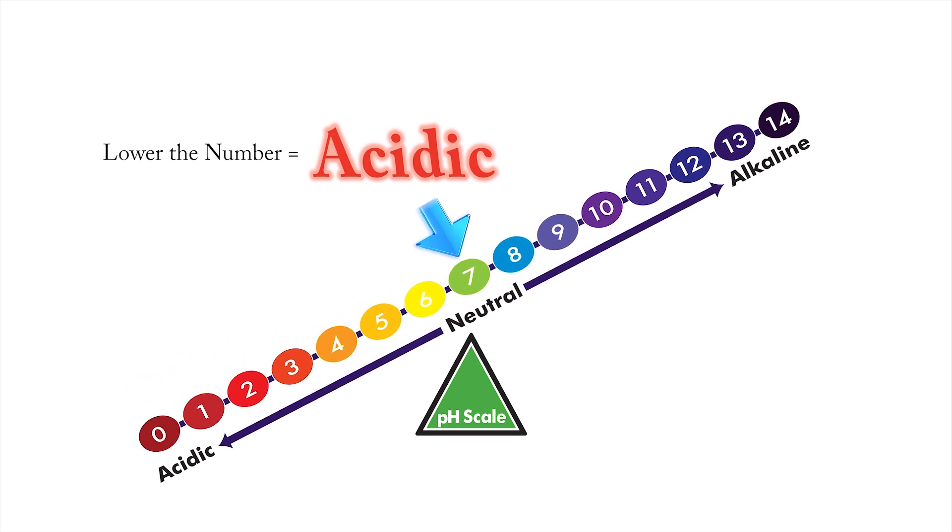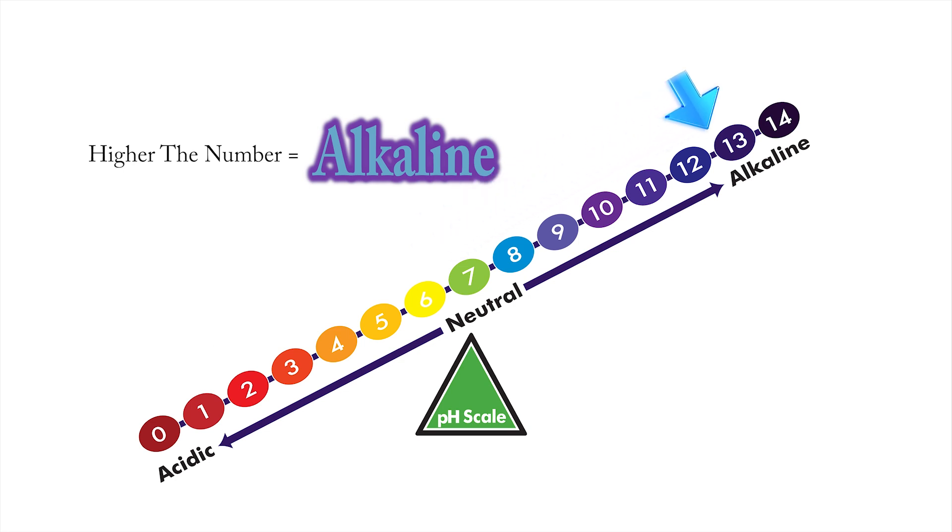The lower the number, the more acidic, and the colors range down from yellow to dark red. The higher the number, the more alkaline, and the colors range from cool blue to awesome purple.